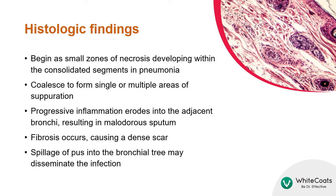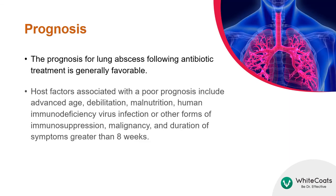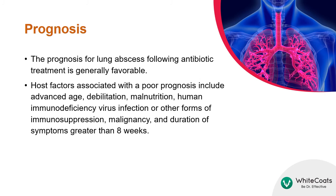The abscess begins as small zones of necrosis developing within consolidated segments in pneumonia, which coalesce to form single or multiple areas of suppuration. Progressive inflammation erodes into adjacent bronchi, resulting in malodorous sputum. Gradually, fibrosis occurs causing a dense scar, and spillage of pus into the bronchial tree may disseminate the infection.